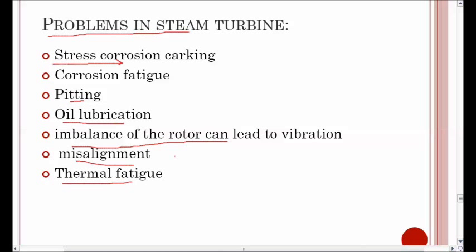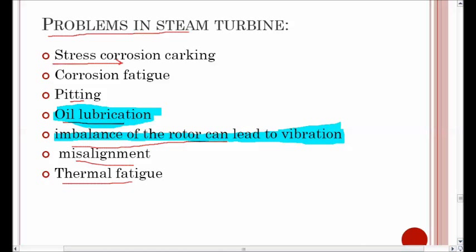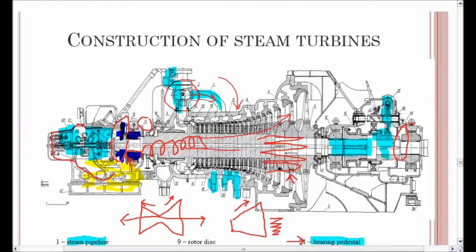From an instrumentation point of view, oil lubrication and rotor imbalance leading to vibration are the most important concerns. Monitoring of vibration is very important in a rotary body like a steam turbine. In the next session we will be moving on to control valves and the major controls used in the steam turbine. Thank you.